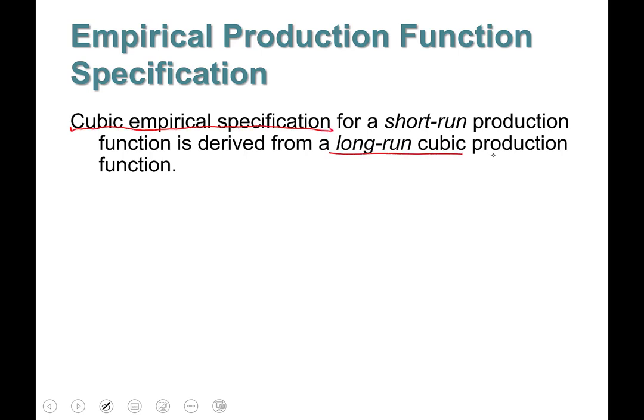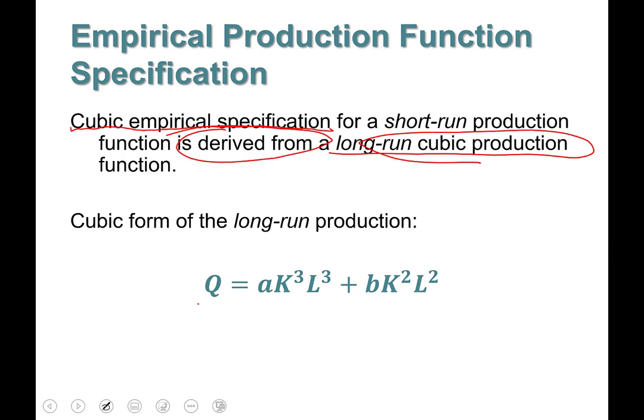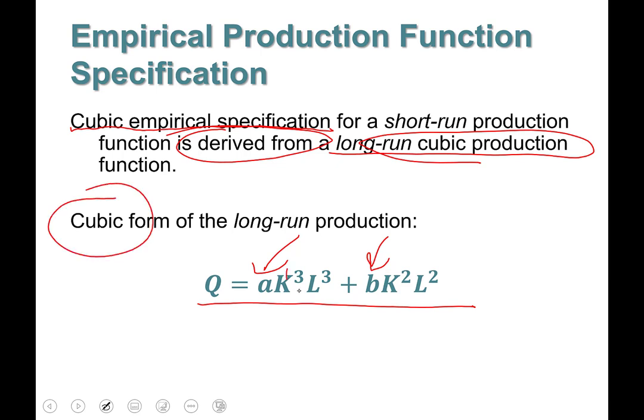We study the short-run production function because it is pertinent to output pricing and hiring decisions. The short-run production function is derived from the long-run cubic production function, which looks like this: Q = aK³L³ + bK²L². Here, a and b are parameters to be estimated, K and L are variables, and the name 'cubic' comes from the highest polynomial power, which is the third power.